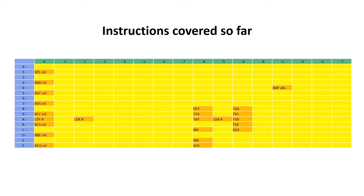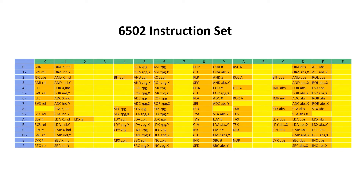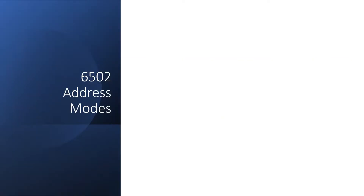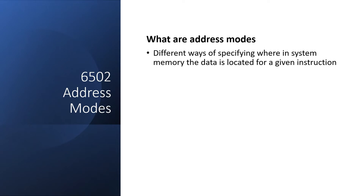Here are the 6502 instructions we've covered so far. It mightn't look much, but we're actually about to get into the heart of it. Over the next 4 or 5 videos we'll fill out most of this table, and then there'll just be a little bit of clean up at the end. Now I want to introduce the topic of addressing modes. They're different ways of specifying where in main memory the data is located for a given instruction.